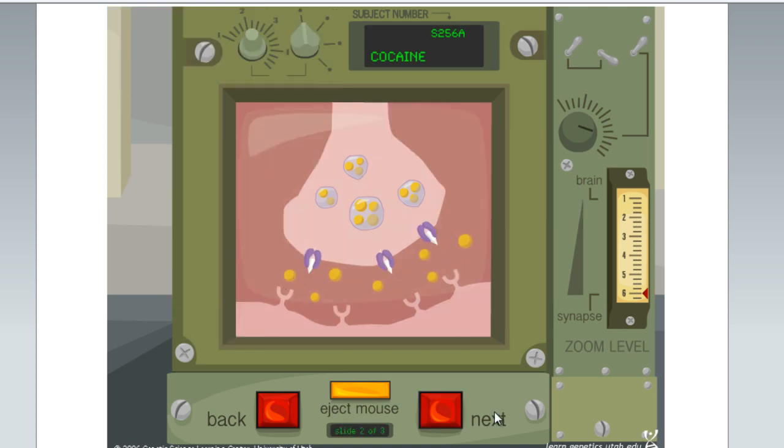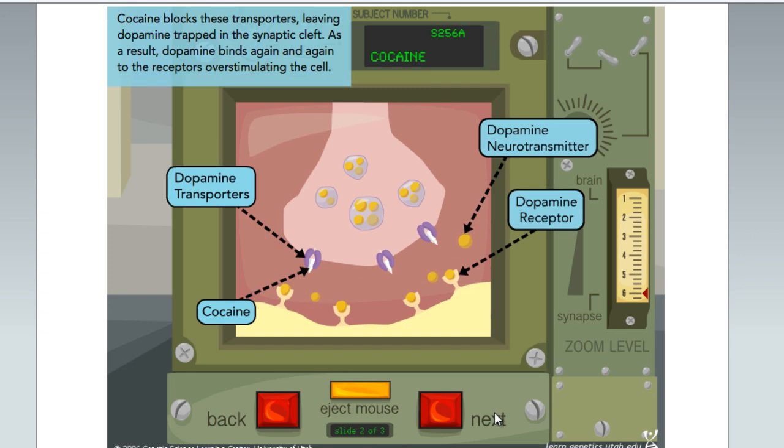Cocaine blocks these transporters, leaving dopamine trapped in the synaptic cleft. As a result, dopamine binds again and again to the receptors, overstimulating the cell.